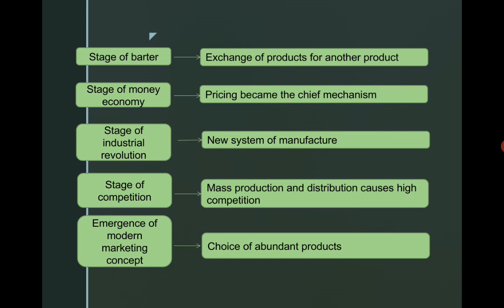The next stage is the stage of competition. Usually during the industrial revolution, the products that are produced lead to competition. Mass production and high distribution costs result in high competition.